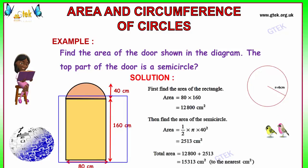Area of the rectangle can be calculated using the formula length into breadth. We got breadth as 80 and the length as 160. 80 into 160, we got an area of 12,800 cm square.